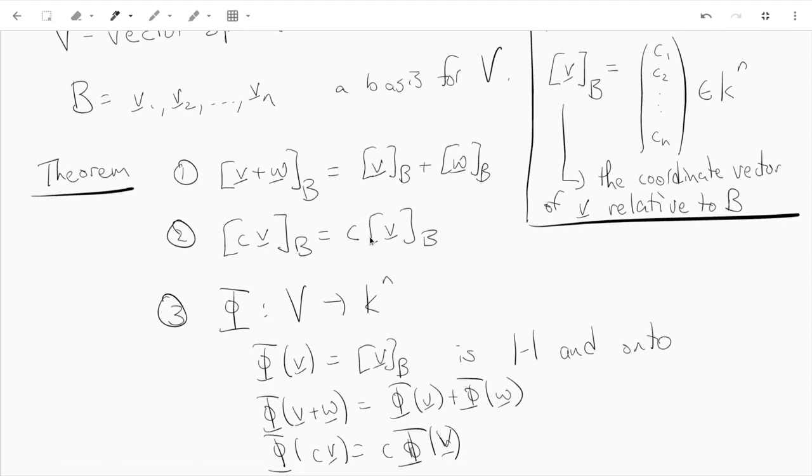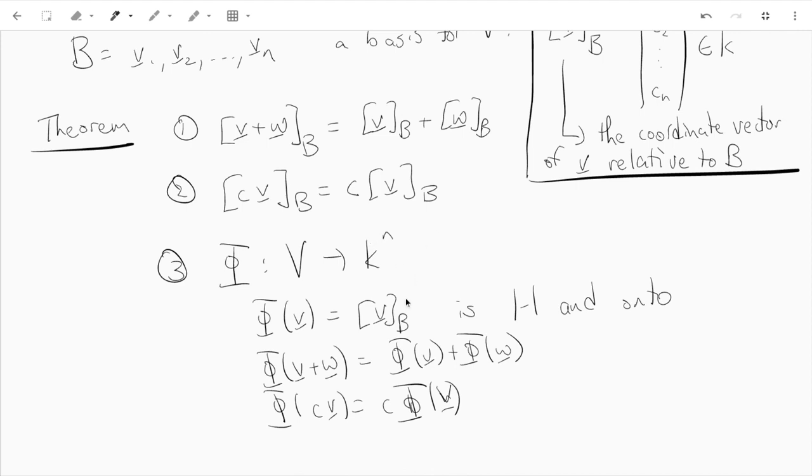And then the third part of this theorem - call this the function. We make a function called taking coordinates relative to B. If I define that function, that gives me a map from vectors to column vectors with entries in K, and that function is one to one and onto and satisfies these two properties.